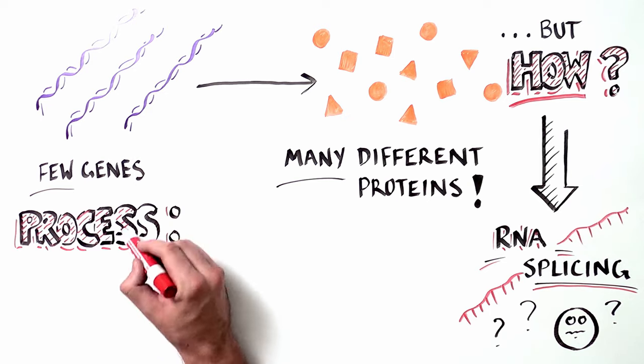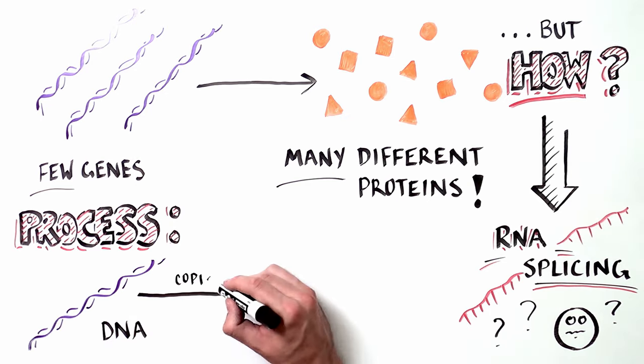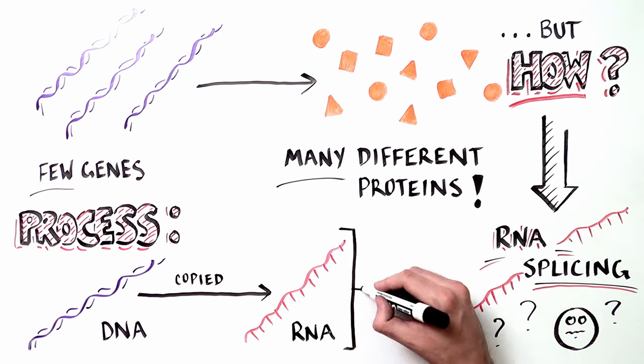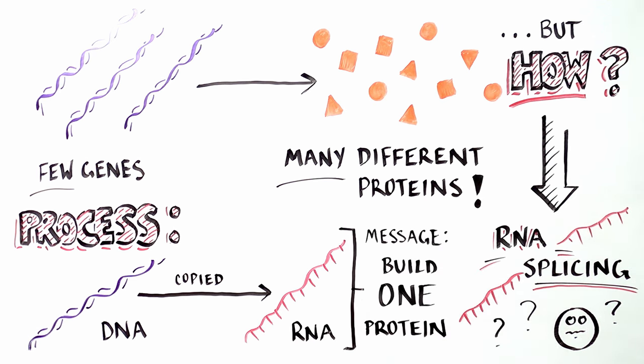The process works like this. A sequence of DNA comprising a single gene is copied. This copy is made of RNA, a molecule related to DNA but more temporary. You can think of this RNA copy as the gene's message—it contains the instructions for making a protein.